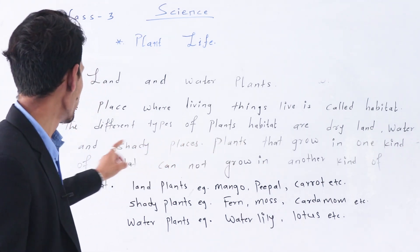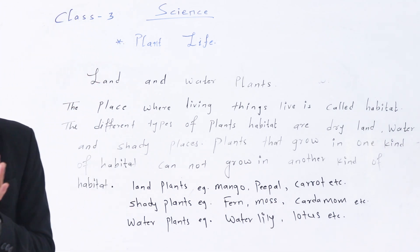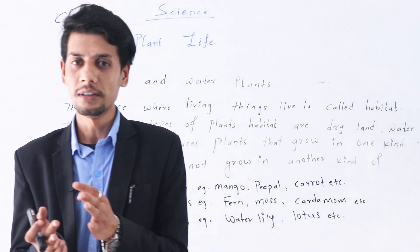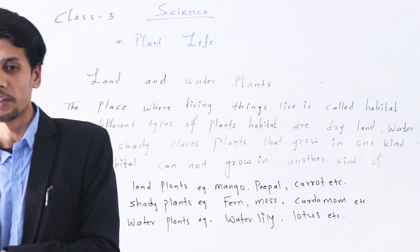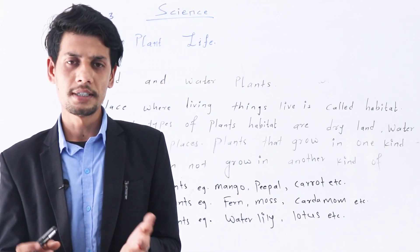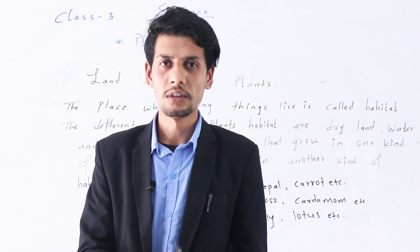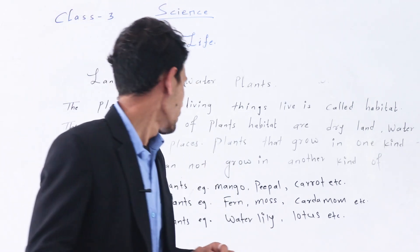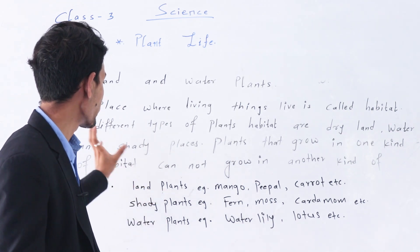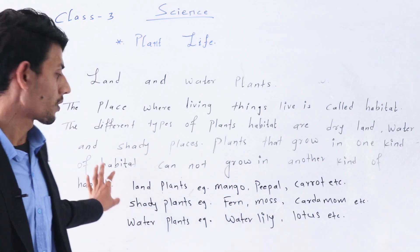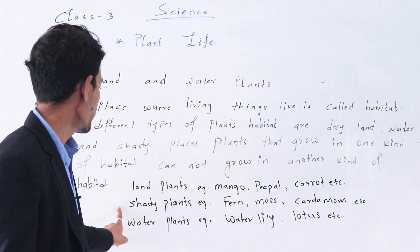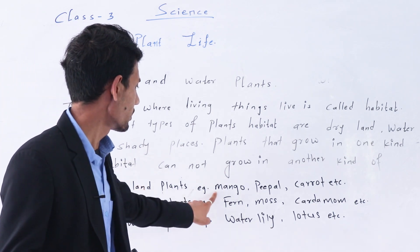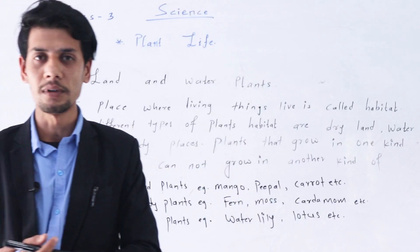Plants that grow in one kind of habitat cannot grow in another. For example, water lily grows in water. According to habitat, plants are divided into three parts: land plants, shady plants, and water plants. Examples of land plants are mango, peepal, carrot, etc.